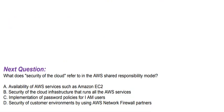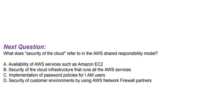Next question: What does 'security of the cloud' refer to in the AWS shared responsibility model? Option A: Availability of AWS services such as Amazon EC2. Option B: Security of the cloud infrastructure that runs all the AWS services. Option C: Implementation of password policies for IAM users. Option D: Security of customer environments by using AWS network firewall partners.